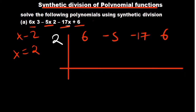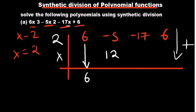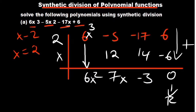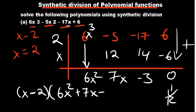The first step is to drop the first coefficient down. Then we multiply: 2 times 6 is 12. Then we add going down. 12 plus negative 5 is 7. Then 7 multiplied by 2 is 14; negative 17 plus 14 is negative 3. Negative 3 multiplied by 2 is minus 6; 6 plus negative 6 gives us 0. The remainder is 0, confirming that 2 is a factor. The highest power was x³, so we reduce powers: we now have x minus 2 as our first factor, and 6x² plus 7x minus 3.